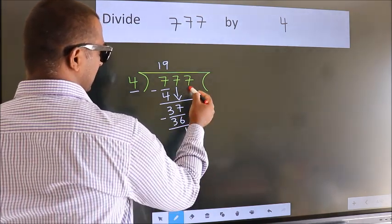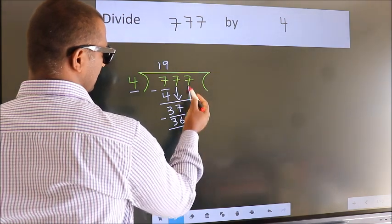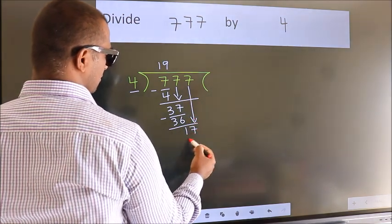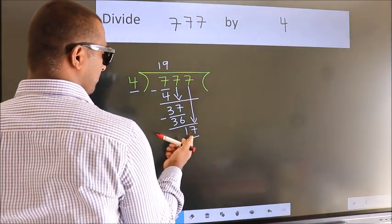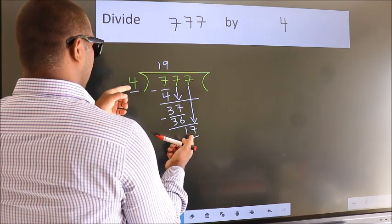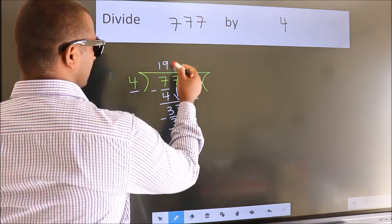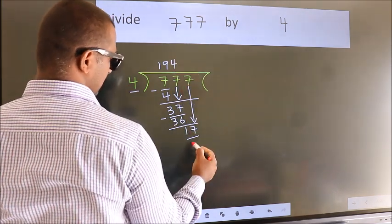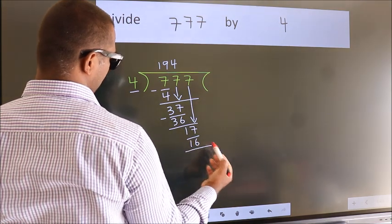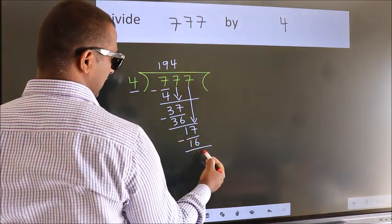After this, bring down the next number. So 7 down, so 17. A number close to 17 in the 4 table is 16. 4 times 4 is 16. Now we subtract. We get 1.